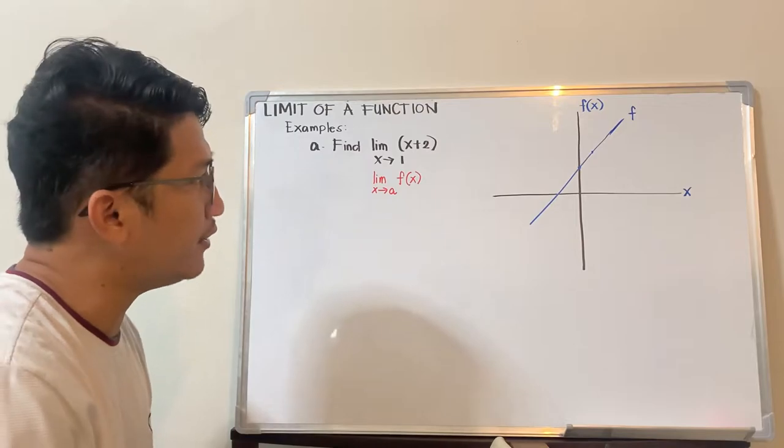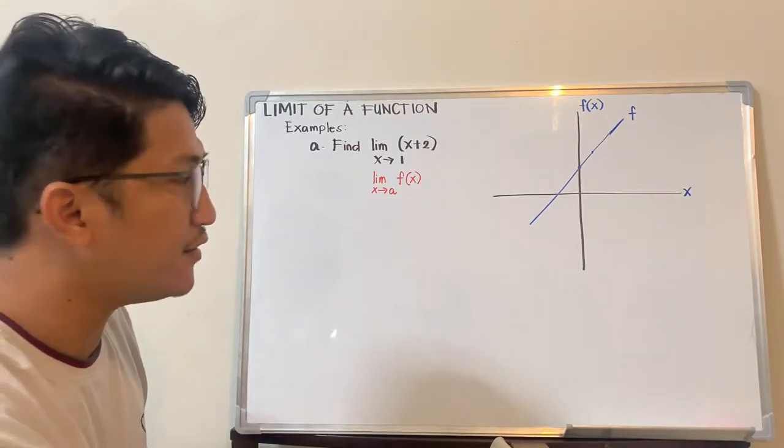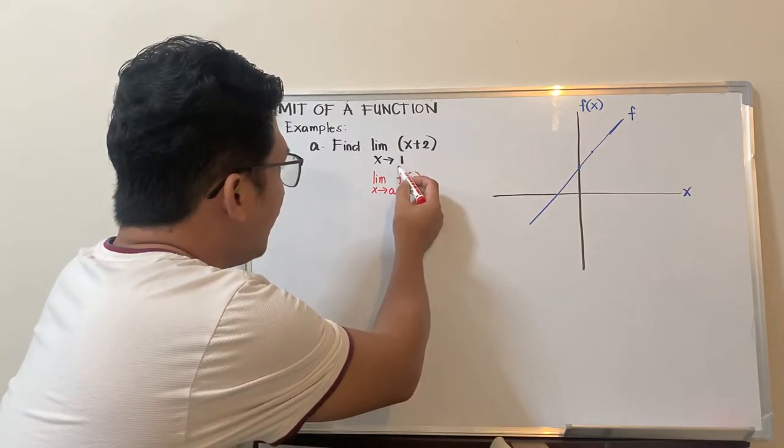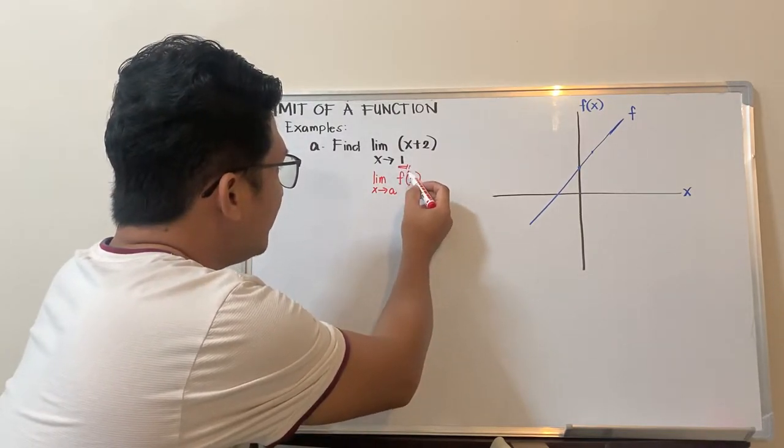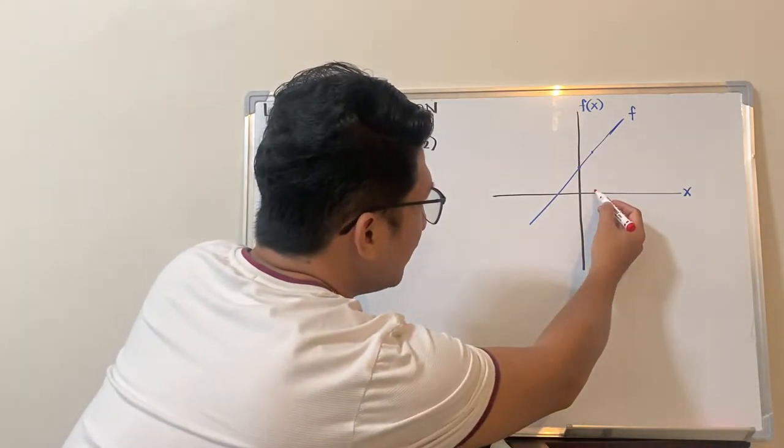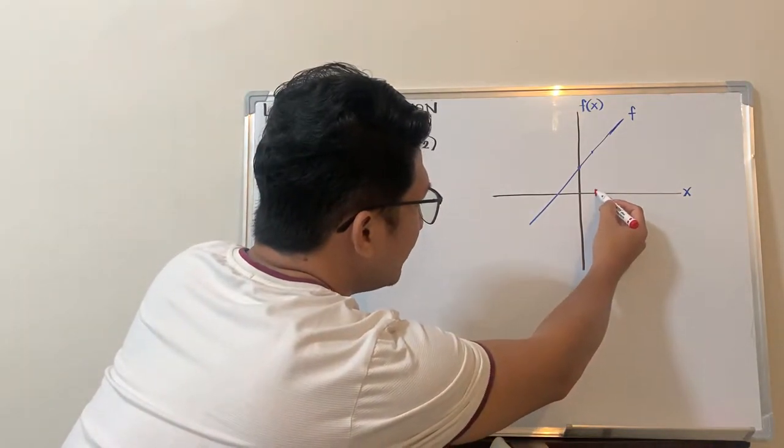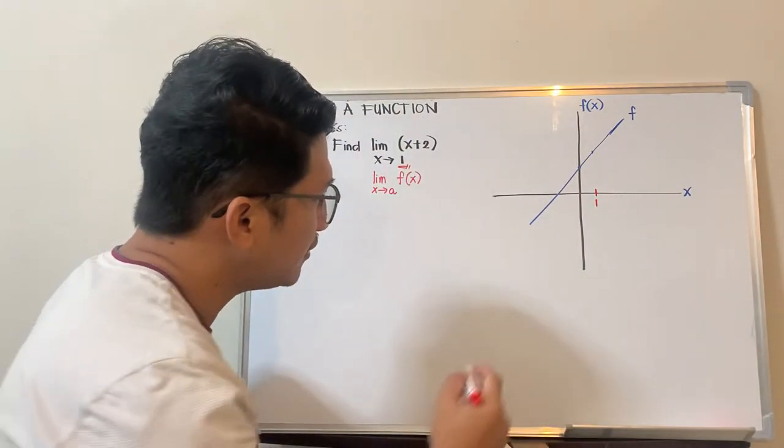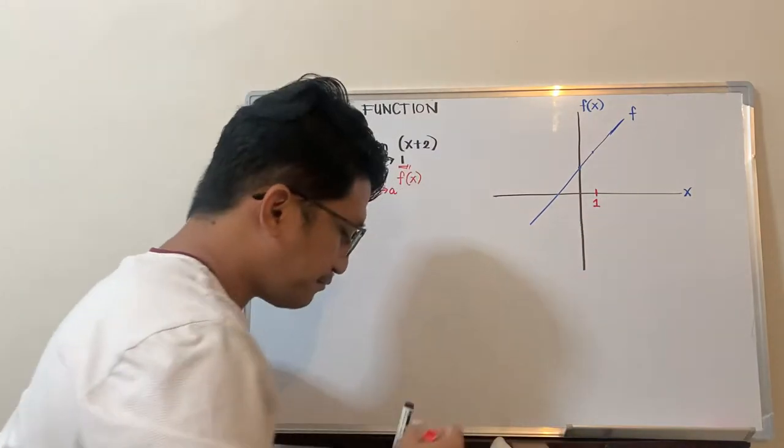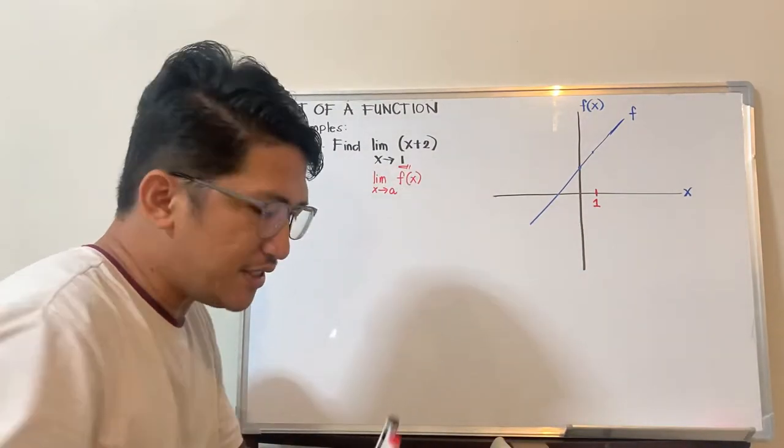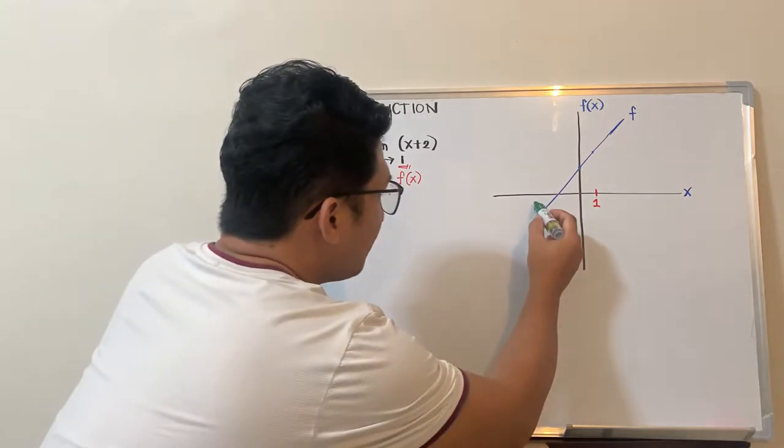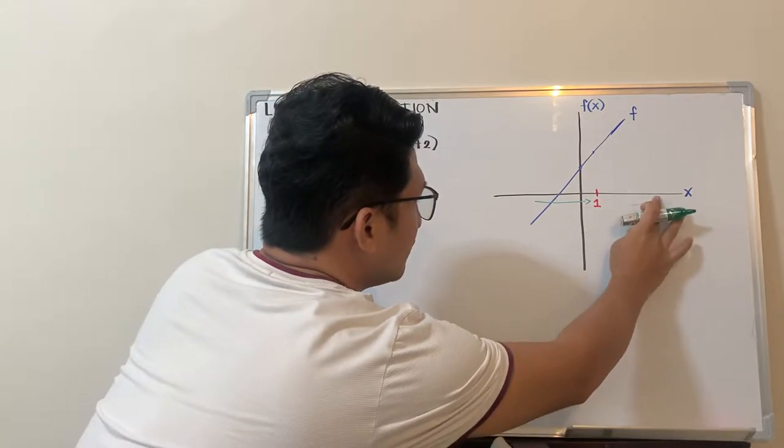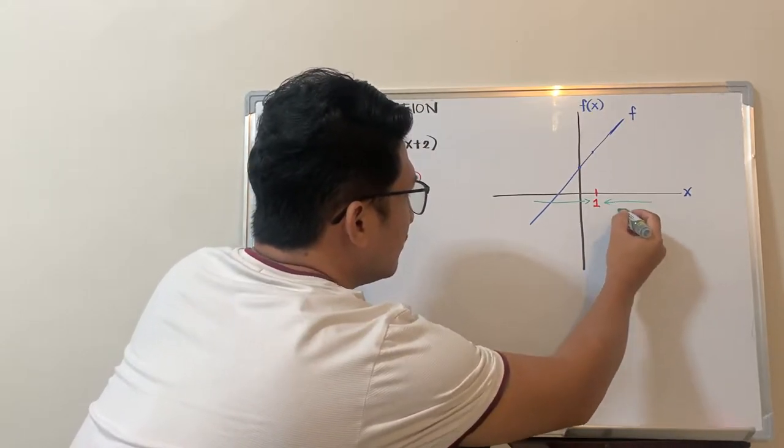If we follow the same procedure from the previous video, first we should consider the value of a. So we have 1 here, guys—squeeze, this is 1. So for example, this is 1 in the x-axis, and this will be 1 here too. This is what we squeeze, from the left and then also from the right.